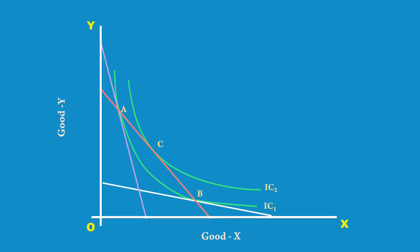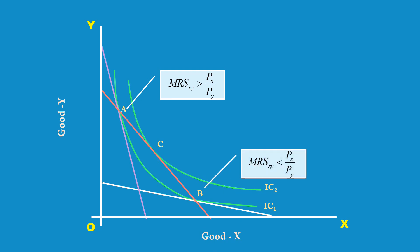Quite a number of viewers raised a pertinent doubt about marginal rate of substitution and price ratio. It goes like this: at point A, marginal rate of substitution of X for Y is greater than price ratio. At point B, marginal rate of substitution of X for Y is less than price ratio. At point C, marginal rate of substitution of X for Y is equal to price ratio.